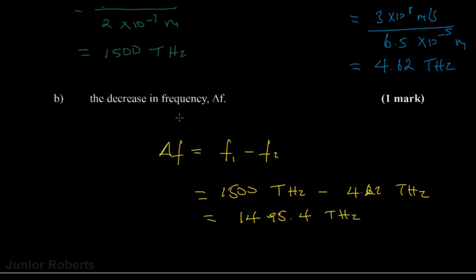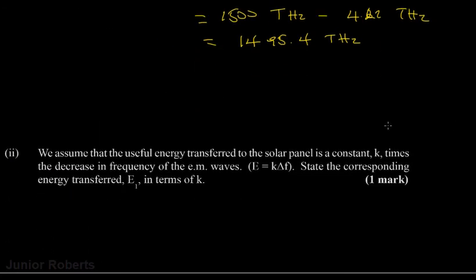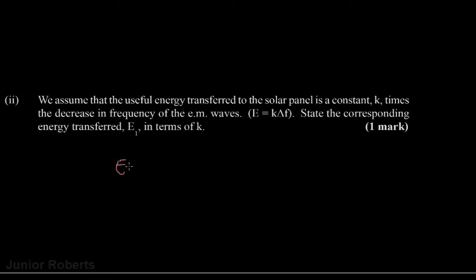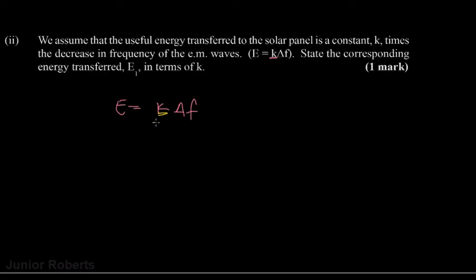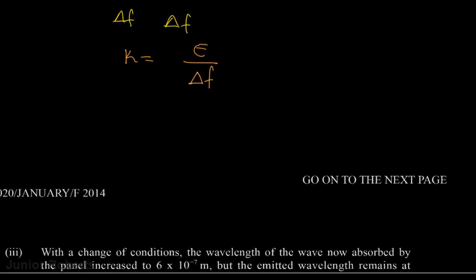The question states that the useful energy transfer to the solar panel is given by E = kΔf, where k is a constant. We are asked to state the corresponding energy transferred E₁ in terms of k. Rearranging to make k the subject, we divide both sides by Δf to get k = E/Δf.